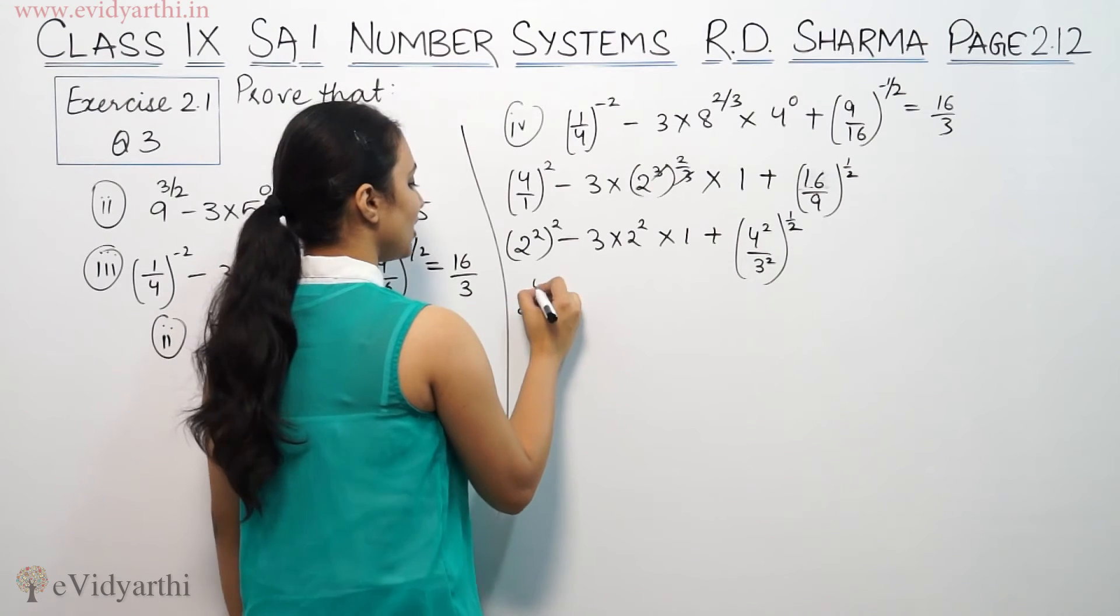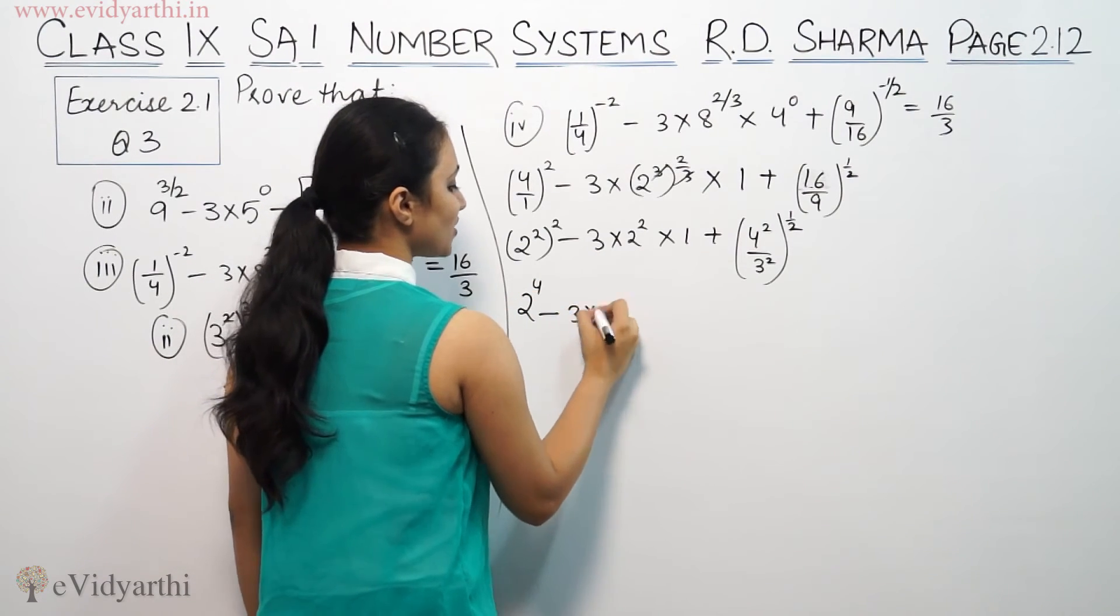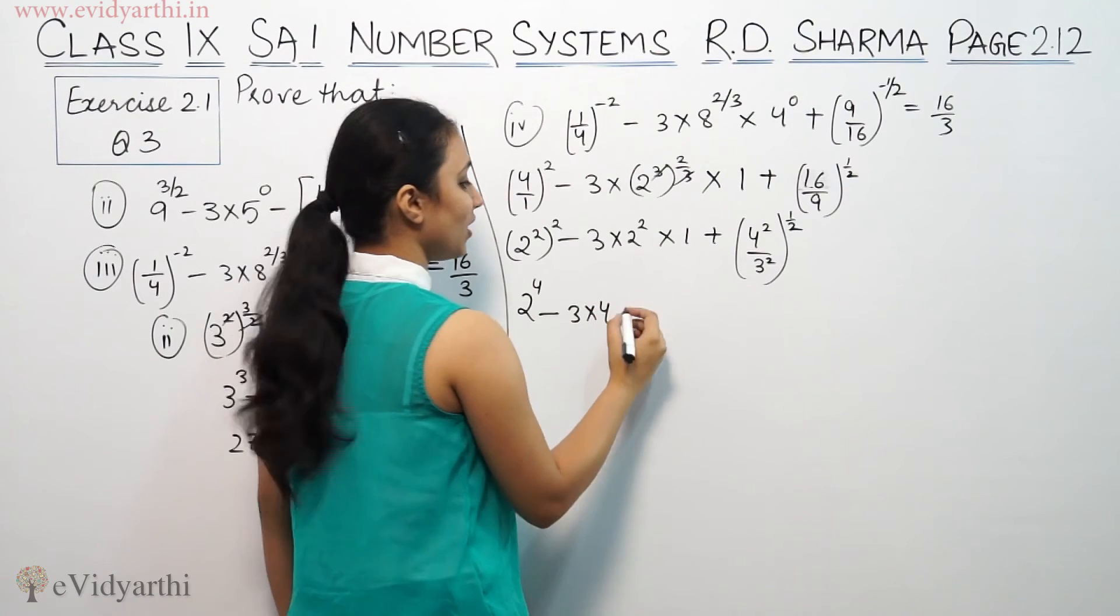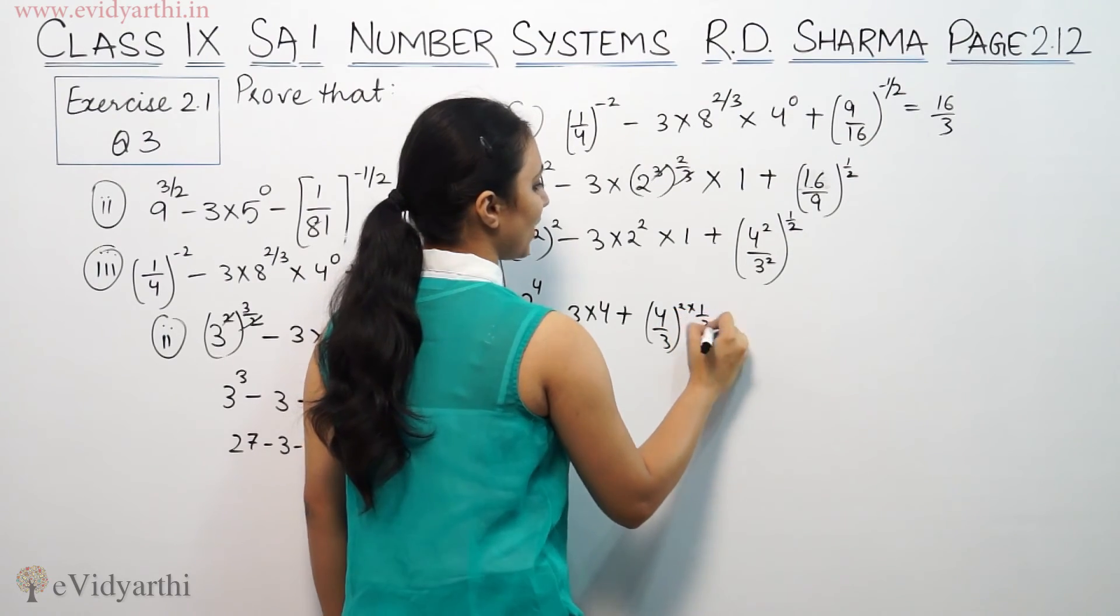So 2 squared means 2 to the power 4 minus 3 into 2 squared is 4. 4 times 1 is 4. Plus 4 by 3 squared into power 1/2.